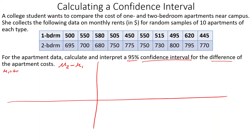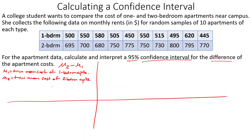Let mu-one be the true mean cost of one-bedroom apartments in the city, and mu-two be the true mean cost of two-bedroom apartments. Our confidence level is 95%. The sample sizes are n1 = 10 and n2 = 10. We have the actual data values, so we'll write down the other statistics after calculating.